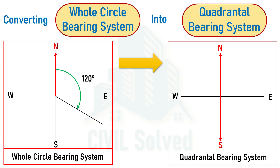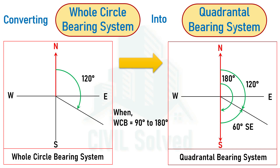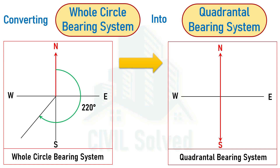Similarly, if we have a line with a bearing of 120° in WCB and are asked to convert it, we can see that this line is near to south, so the angle is measured from south. The total angle from north to south is 180°, and the angle from north to the line is 120°, so the remaining angle is 60°. The line lies in the SE quadrant, so we write S60°E. The generalized formula for WCB from 90° to 180° is: QB = 180° − WCB, written with SE.